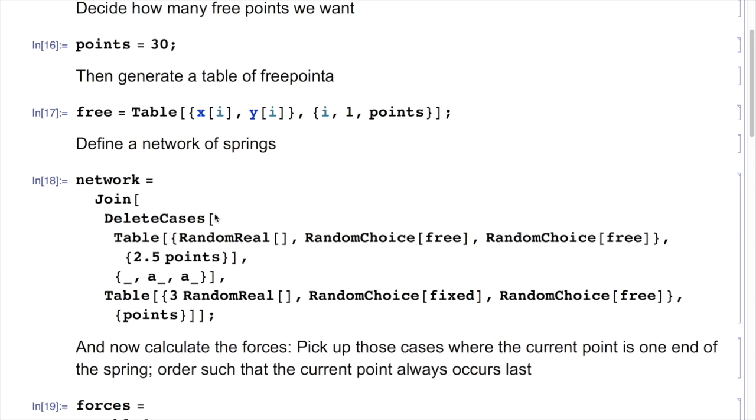But to make it slightly neater I actually delete those springs that connect to themselves by essentially deleting the case where I've got a pattern with an arbitrary number in the first entry, so the random real is arbitrary, but the second two entries just are the same pattern, so they're equal, which really means I'm connecting the same spring.